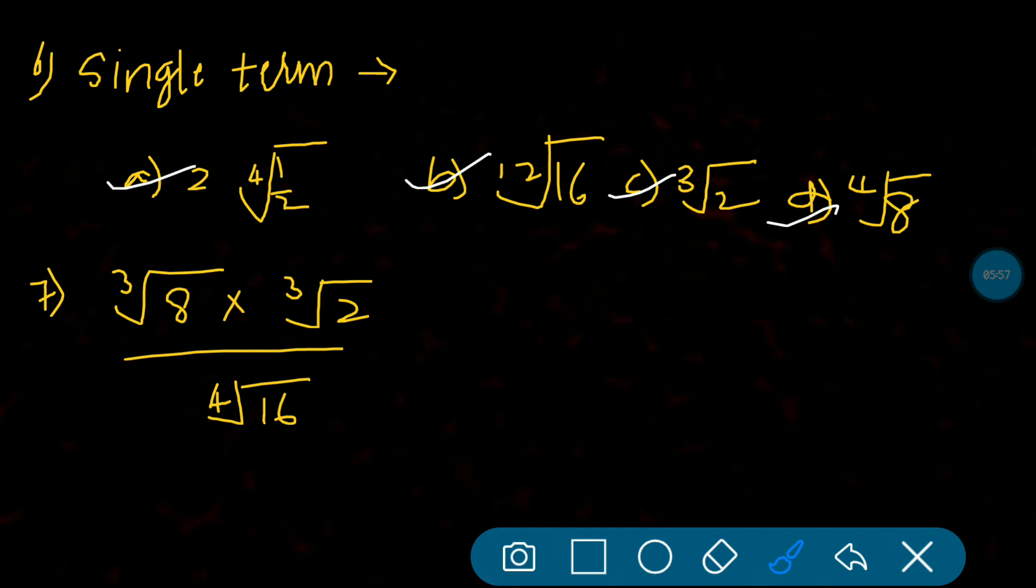Seventh question: cube root of 8 multiplied by cube root of 2 divided by fourth root of 16. This one is not like the fourth question. Here we have to use a very easy technique. What is cube root of 8? It's 2 because 2 cube is 8.